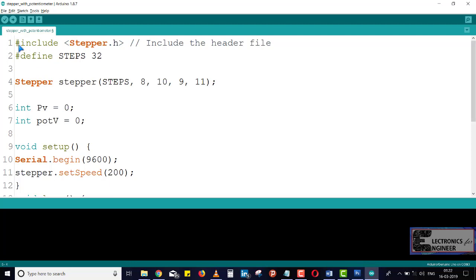I included a header file, stepper.h. And after that, I define steps as 32. You can also give 64, no problem.